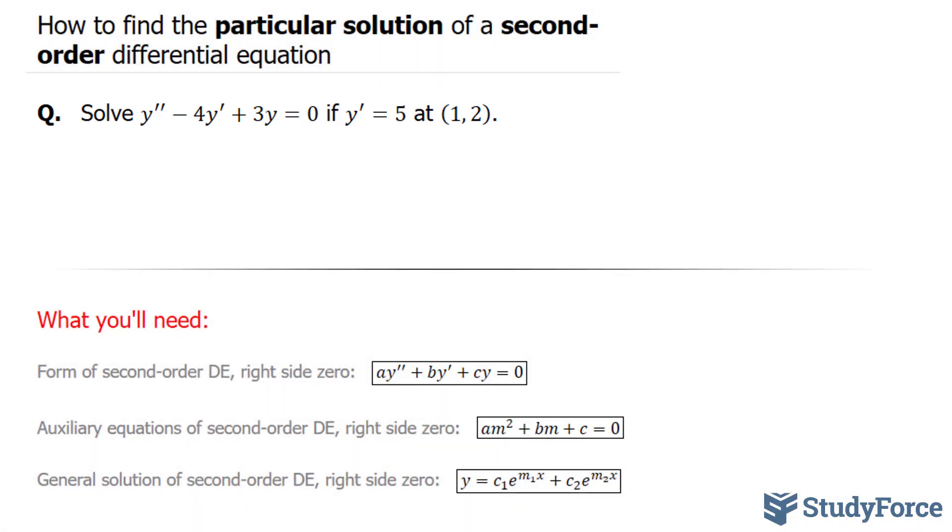One thing you'll notice right away is that this is a second order equation where the right side is equal to 0, and as a result, you can match it to the auxiliary equation shown below. Technically, we can convert this into a quadratic and find values of m that will represent constants within the general solution.